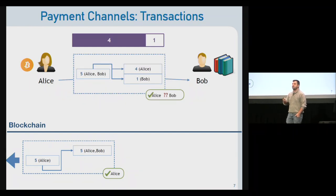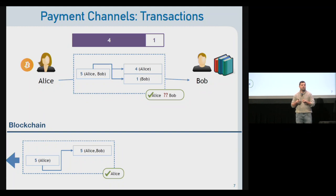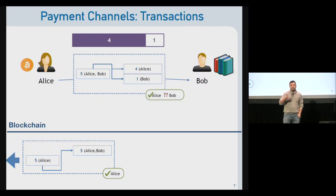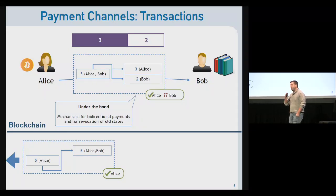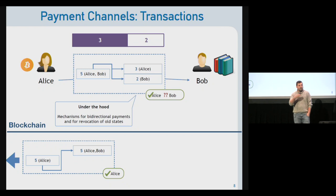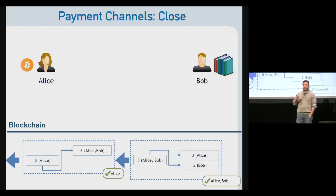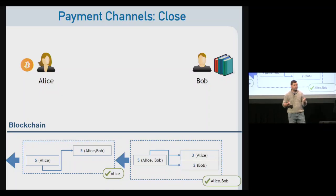Once the channel is open, Alice can perform several off-chain transactions by redistributing coins from the multi-sig contract. If she pays one coin to Bob, four coins go back to Alice. Bob just waits for more payments rather than immediately closing the channel. In practice, payments can be bidirectional and include revocation mechanisms. When both are done, they close the channel by signing the last state and putting it on the blockchain — only two transactions on-chain, but many payments off-chain.